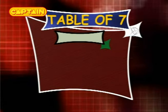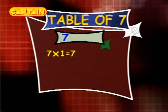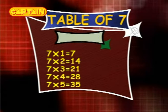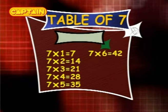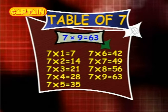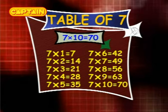Table of 7. 7×1 is 7. 7×2 is 14. 7×3 is 21. 7×4 is 28. 7×5 is 35. 7×6 is 42. 7×7 is 49. 7×8 is 56. 7×9 is 63. 7×10 is 70.